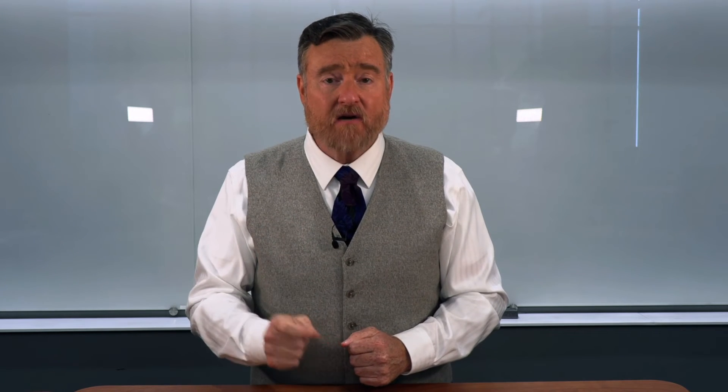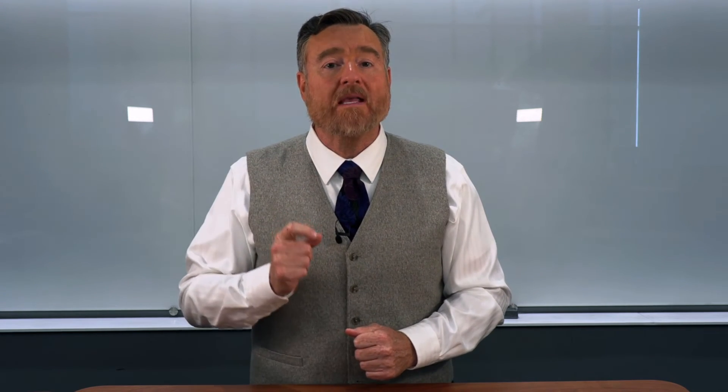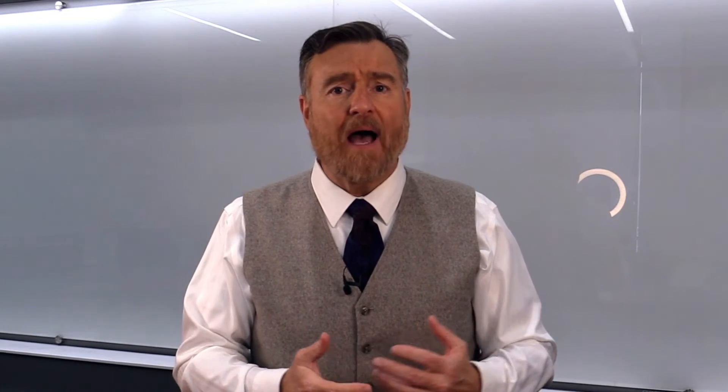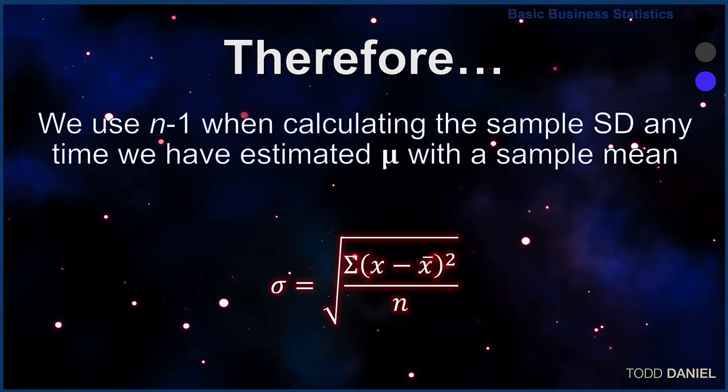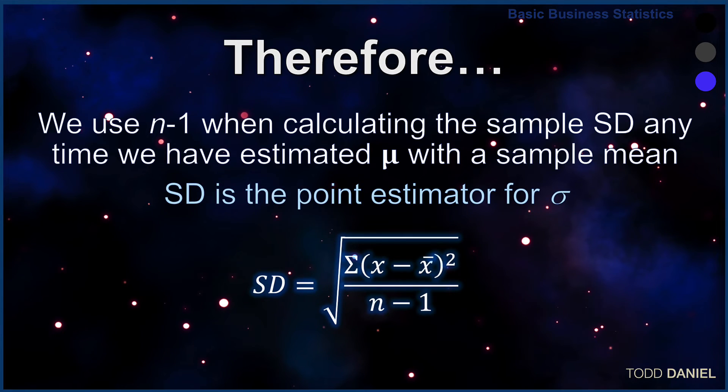When we use a sample mean as the estimator for a population mean in our formula, we lose one degree of freedom. We correct for the loss of the 1 degree of freedom by using sample size minus 1 in the formula.